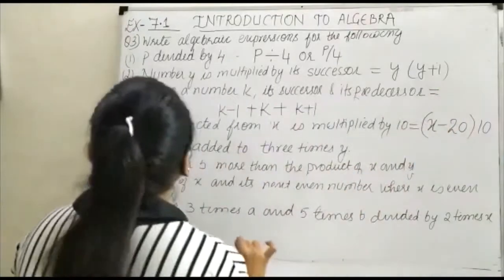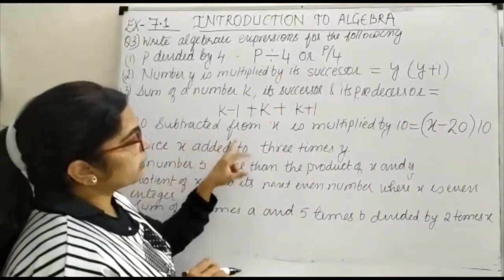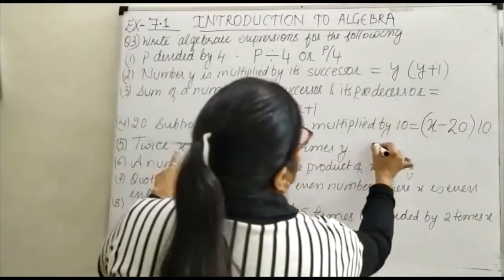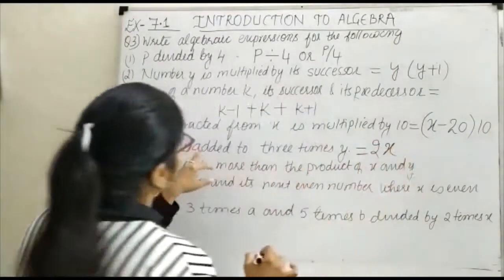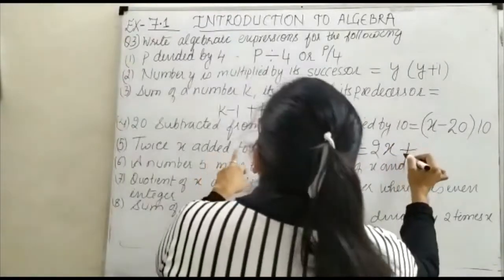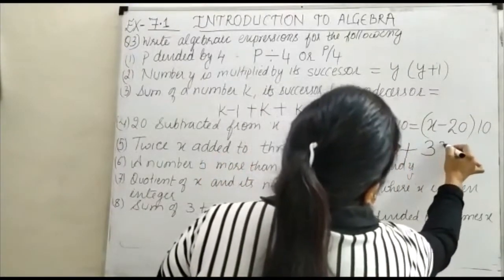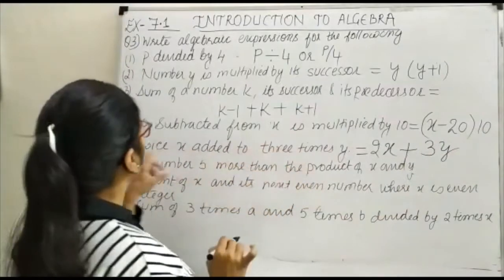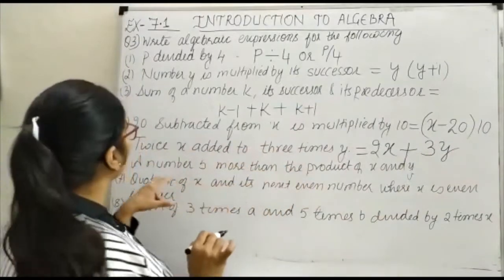Next is twice x added to 3 times y. Twice x means 2 into x. So this is equal to 2x plus 3 times y, that is 3y. Times means multiply, twice also means multiply.